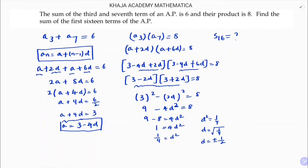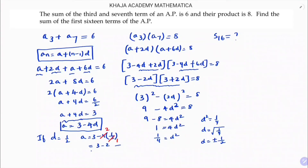Case 1: suppose d = 1/2. Substituting into a = 3 − 4d: a = 3 − 4 × (1/2) = 3 − 2 = 1. So a = 1 and d = 1/2.